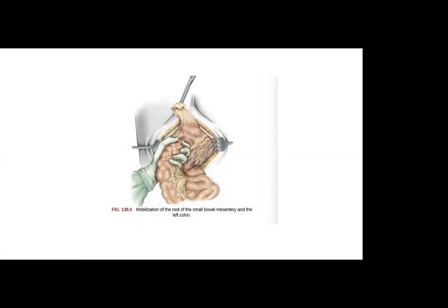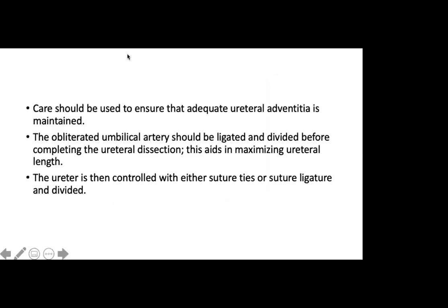Attention is then turned to bowel mobilization to achieve adequate exposure of the great vessels and the ureters. On the right side, the white line of Toldt is incised and carried around the cecum where the posterior peritoneum is incised to allow mobilization of the root of the small bowel mesentery. On the left side, the white line of Toldt is likewise incised and a window is created between the sigmoid colon mesentery to communicate with the posterior peritoneum. This space will later be used to transpose the left ureter to the right quadrant for urinary diversion. Care should be used to ensure that adequate ureteral arterial supply is maintained.